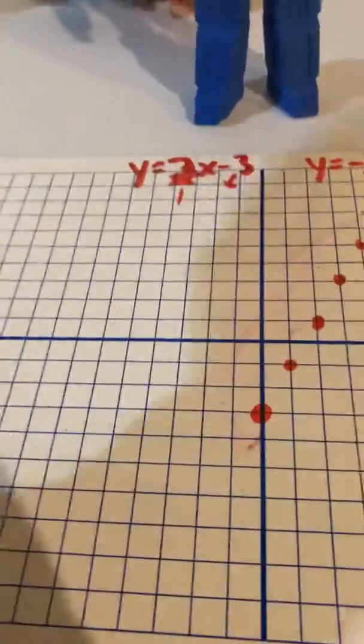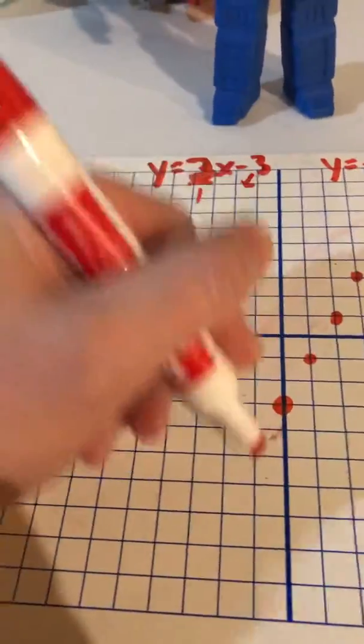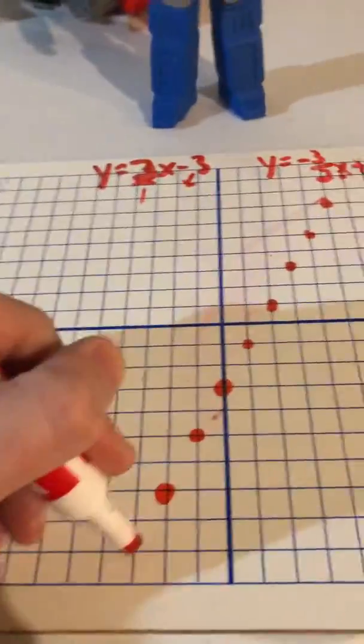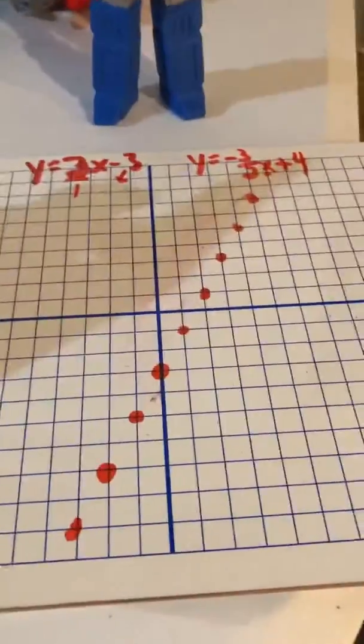And I'm going to do an opposite move. So opposite move, if up and right's normal, the opposite would be going down and left. So down, left, down, left. Alright, that should be plenty of dots. Alright, so there's the first line graph.